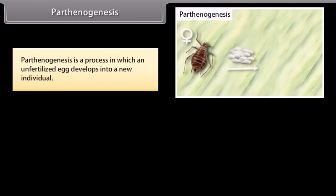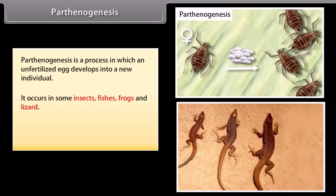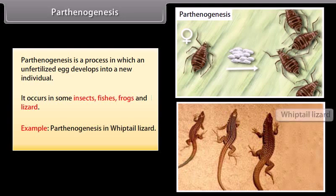Parthenogenesis is a process in which an unfertilised egg develops into a new individual. It occurs in some insects, fishes, frogs, and lizards. Example: parthenogenesis in the whiptail lizard.